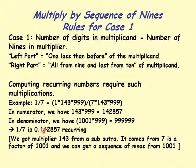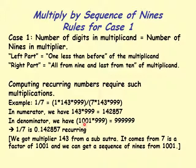So 1/7 is 0.142857 recurring. The multiplier 143 comes from a sub-sutra: 7 is a factor of 1001, and 1001 (a 1 sandwiching zeros) multiplied by a sequence of 9's gives a longer sequence of 9's, where the number of 9's is one more than the number of zeros.